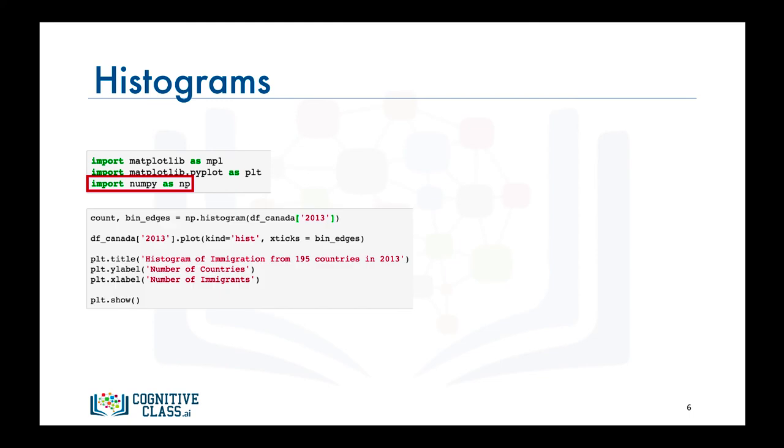Then we call the numpy histogram function on the data in column 2013. What this function is going to do is it is going to partition the spread of the data in column 2013 into 10 bins of equal width, compute the number of data points that fall in each bin.